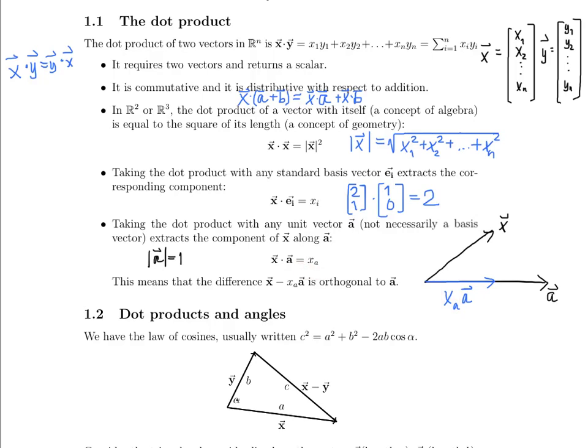As a result, this also means that the difference x, the vector, minus x sub a times the vector a is orthogonal to a. How do we picture that on this particular drawing? It's this vector right there. And so, once I've drawn it out like that, it probably should not be a surprise to you that the red vector and the vector a are orthogonal.